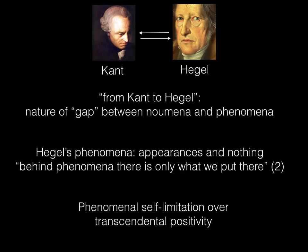How does Hegel intervene here with a logic that can help us think a totally other horizon for philosophy? According to Zizek, Hegel helps us by being "more Kantian than Kant himself," by asserting that the true division is not between appearances of our phenomenal perception and the inaccessible noumenal in-itself, but rather between the appearances of our phenomenal perception and nothing. This means that for Hegel, there is nothing behind phenomena—there is only what we put there.